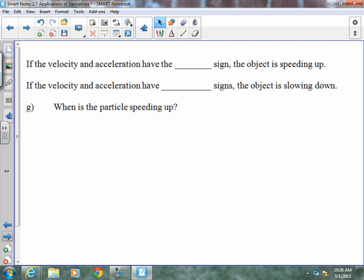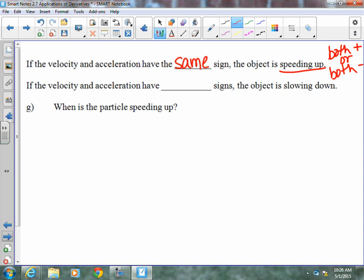If velocity and acceleration, when they're asking you about speed, and they want to know if it's speeding up or slowing down, you have to consider both velocity and acceleration. If velocity and acceleration have the same sign, meaning both positive or both negative, then we know it's speeding up. If velocity and acceleration have a different sign, then we know the object is slowing down.